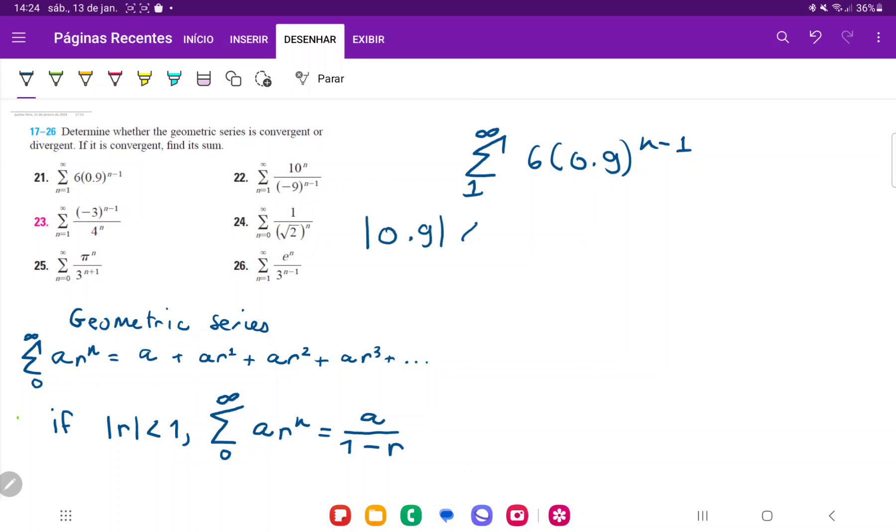The absolute value of 0.9 is less than 1, so it does converge. And now that we found out that it does converge, we have to find out its sum.